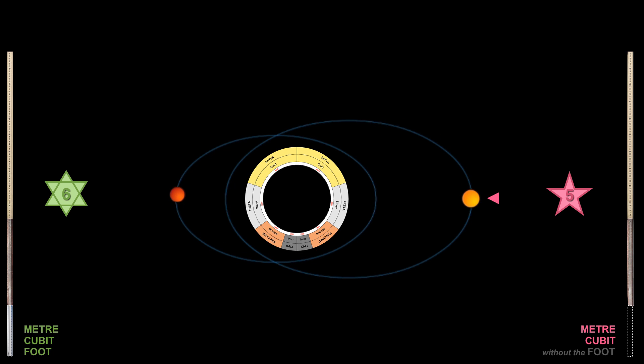Here at apoapsis is when precession is slowest at 50 arc seconds per year. This would equate to the period we call the Dark Age, when we are farthest from the great center.